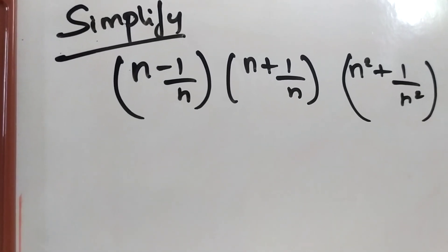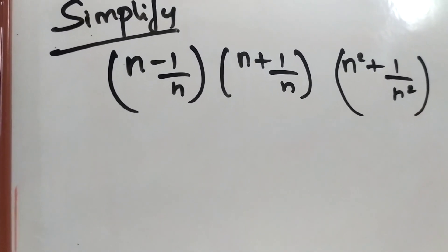The problem is: n minus 1 by n, into n plus 1 by n, into n square plus 1 by n square.